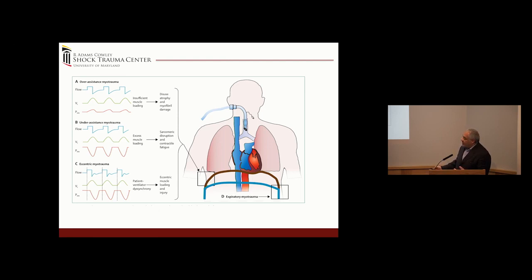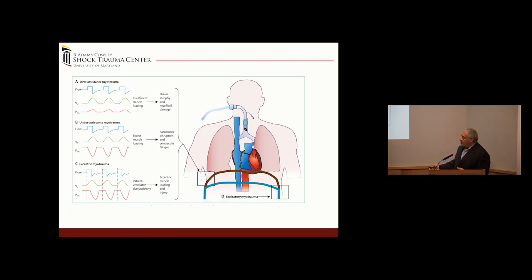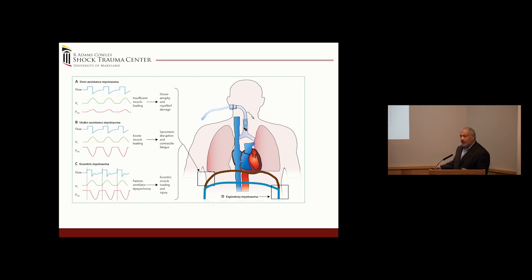We have two ventilators — a muscular one and an electrically-driven one — and they may not always work well together. You can have eccentric myotrauma: the patient is exhaling, the diaphragm is relaxing, and then you get an inspiration from the machine. Any triggering asynchrony could lead to a disjointed interaction between these two ventilators. There's also data suggesting you can stretch muscles by rapidly dropping PEEP.